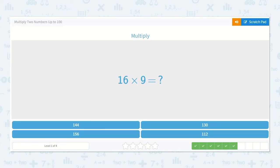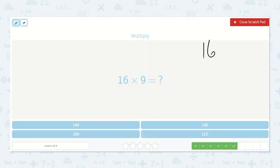Now we have 16 times 9. 9 times 6 is 54, so my 4 goes in the ones place, and the 5 goes in the tens place. 9 times 1 is 9, plus 5 more is 14. So our answer is 144, which is right here.